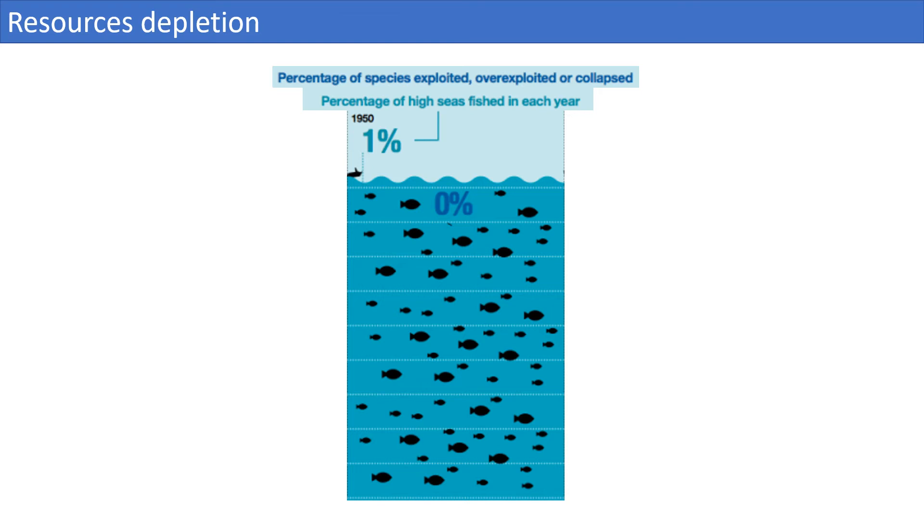When the resources are consumed faster than they can be replenished, they are eventually depleted. Here is an example about how overfishing has increased over the past 70 years and affected biodiversity in the seas. In the 1950s, about 1% of high-sea surfaces were fished per year, and there were no recorded observations of exploited, overexploited, or collapsed fish species.